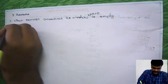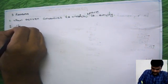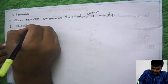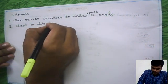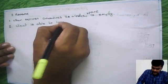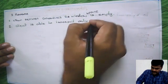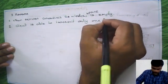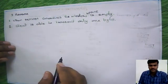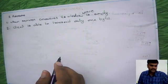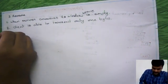And the second one is, if suppose client is able to transmit only one byte. In this case also there may be chance. Here client is able to transfer only one byte. In this case also.